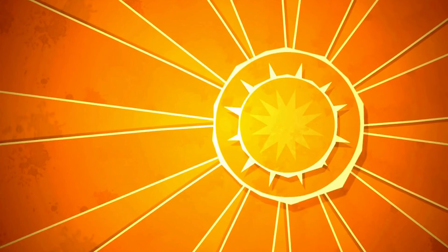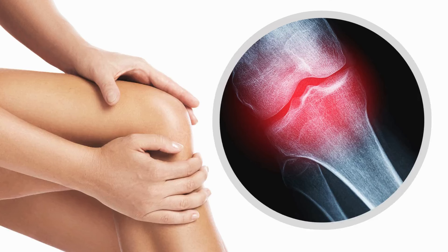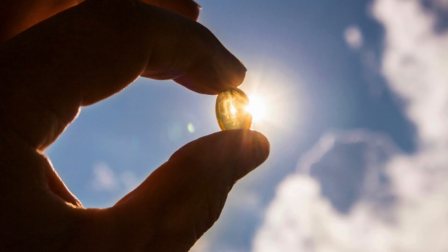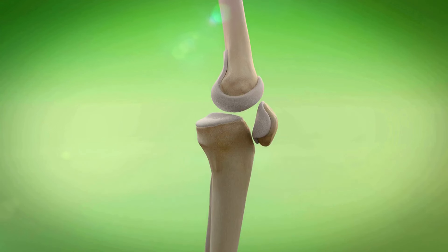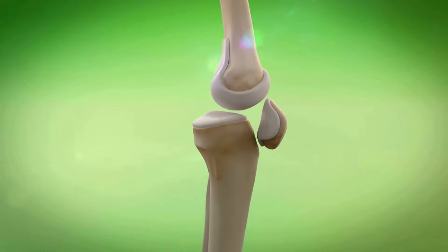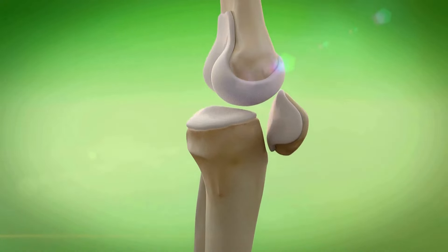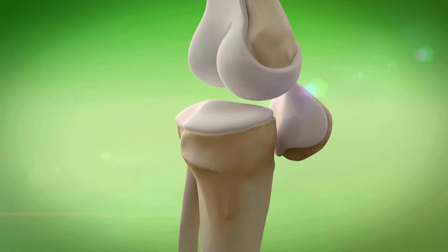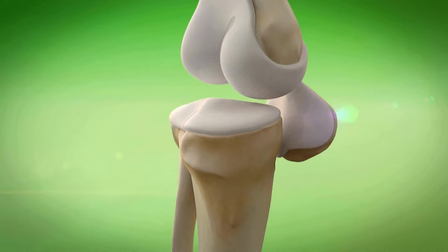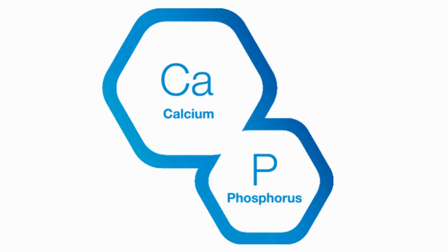Vitamin D is called the sunshine hormone or bone hormone. As its name indicates, most of the vitamin D is obtained from sun rays, and it is also a very important vitamin for bone metabolism, dealing with calcium and phosphorus which are important for bone development.